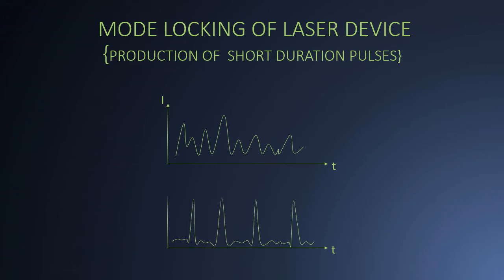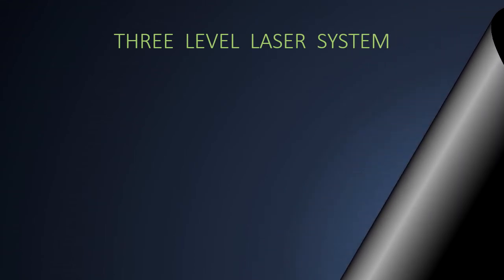By mode locking of a resonator, we can obtain periodic and ultra-short duration pulses of high power as shown in the second graph. Now let us see two different types of laser systems.